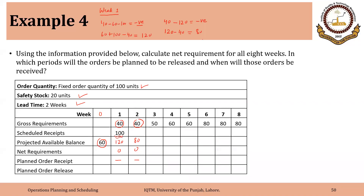The same holds for week three as well. In week three the requirements are 50 and available inventory is 80, so we are again having negative net requirements. We do not need any planned order receipt in week three. After meeting the requirement, we will be left with 30 units — total supply is 80 and total demand is 50. We are able to meet the demand from the available inventory and are not placing any new order.